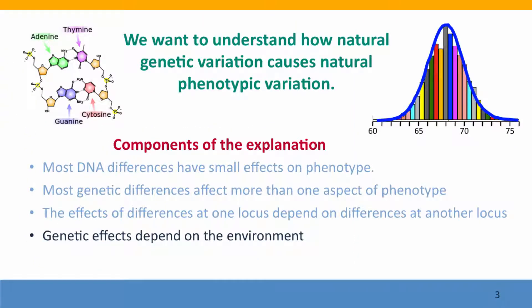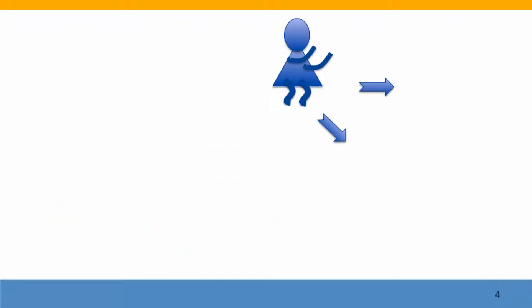We want to understand how genetic variation causes phenotypic variation, or what causes the differences in phenotypes that we see. And the new component is the environment. So let's think about height. Here's a baby girl — how tall is she going to be when she grows up? Well, it depends not just on the genes she inherited, but on her environment.